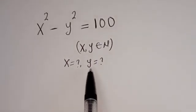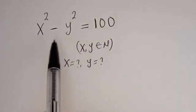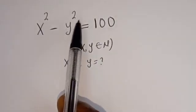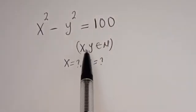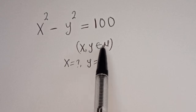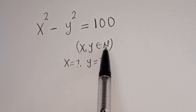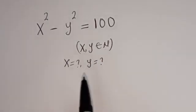Hello. How to solve for x and y in this equation: x squared minus y squared is equal to 100, where x and y are members of the natural numbers.